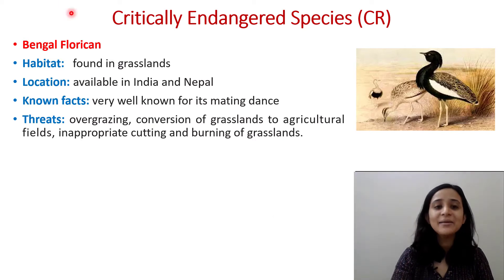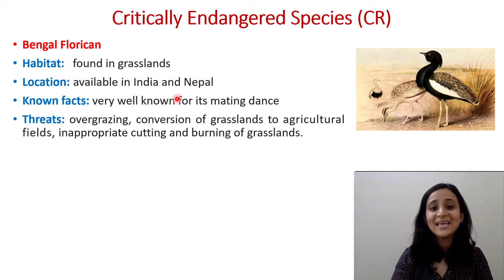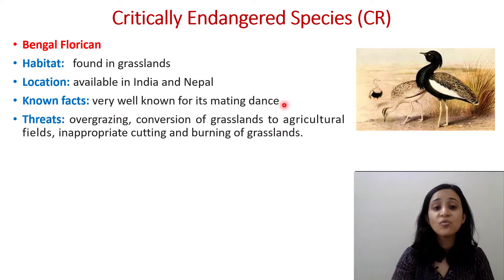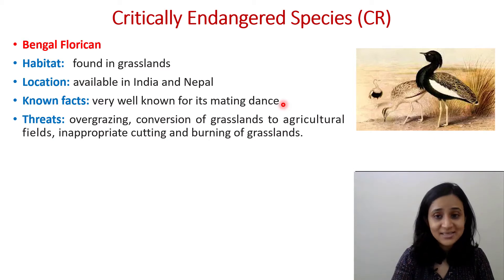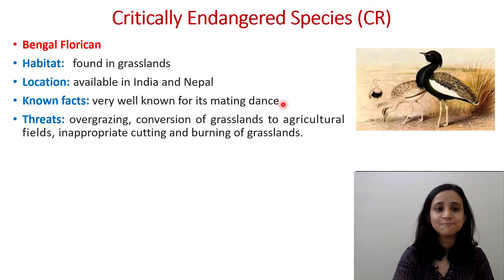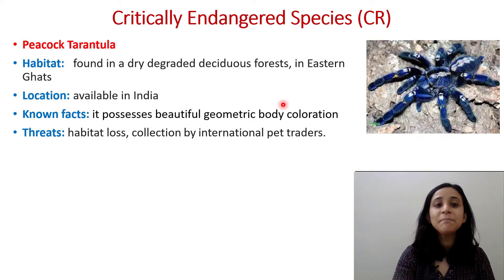Next is the Bengal Florican, also under Critically Endangered. Its habitat is found in grasslands, located in India and Nepal. It is very well known for its mating dance. Threats include overgrazing, conversion of grasslands to agricultural fields, and inappropriate cutting and burning of grassland.